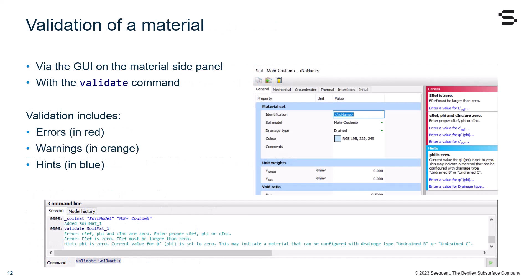When working with materials, it is normal to make typos or mistakes. PLAXIS offers a validation option which can be seen via the GUI on the material set side panel, or by running the validate command.